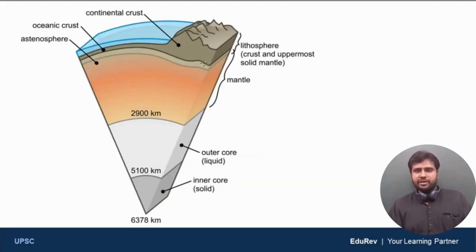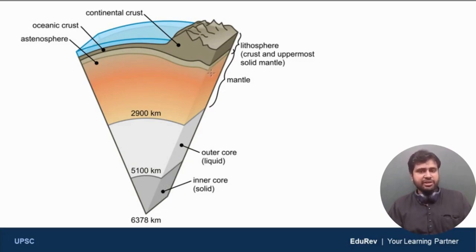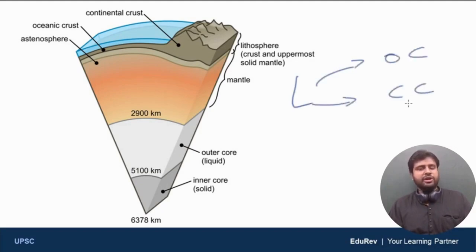This diagram is a cross-sectional diagram. The top 100 kilometers is lithosphere; beneath that we have mantle around 2,900 kilometers thick; beneath the mantle you have the outer core which is liquid; and beneath the outer core you have the inner core which is solid. The thing to focus on in this image is oceanic crust and continental crust — lithosphere can be of two types: oceanic crust and continental crust.